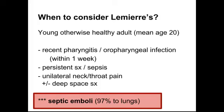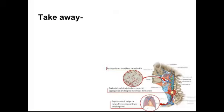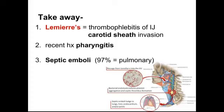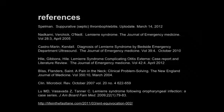Remember, 97% of patients have some kind of septic emboli to the lungs. Takeaway: Lemierre's is a thrombophlebitis of the IJ with carotid sheath invasion, recent history of pharyngitis, and this results in septic emboli. 97% have pulmonary involvement, and this is caused by Fusobacterium bacteria. Thanks for joining us on EM in 5.